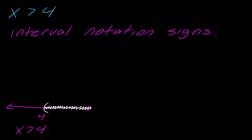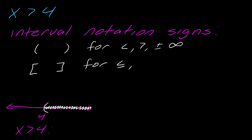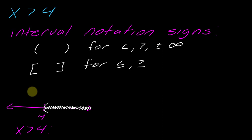The next is interval notation. So let's review some of the signs here. For interval notation, we use round brackets for less than, greater than, and either positive or negative infinity. Versus we use square brackets for less than or equal to or greater than or equal to. Building off of our example of x is greater than 4, I think it's often easier to do this if you have a number line in front of you. Interval notation is kind of like reading a book from left to right — it's all about saying where do you start and where do you end.